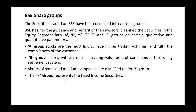F Group represents fixed income securities — such as debentures, preference shares, or bonds — which provide a fixed income. Unlike equity, these instruments give companies a fixed and steady income, and they have been categorized under the F Group.